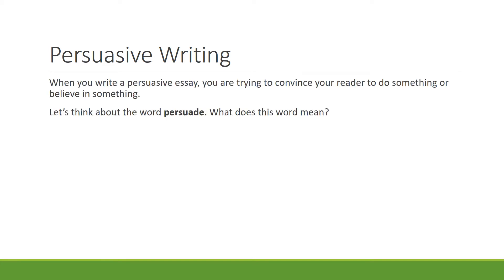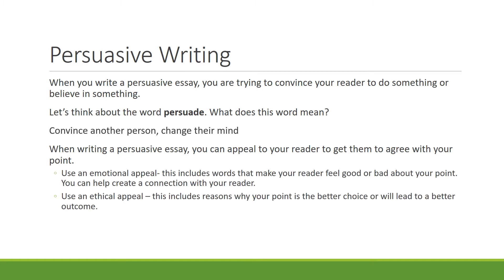Let's talk about the basis of a persuasive essay. When you write a persuasive essay, you are trying to convince your reader to do something or believe in something. Let's think about the word persuade — what does this word mean? When you are trying to persuade someone, you may be trying to convince them or change their mind about something. When writing a persuasive essay, you can appeal to your reader to get them to agree with your point. While there are several different types of appeals you can use in persuasive writing, the two main ones are emotional appeals and ethical appeals.